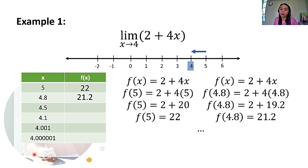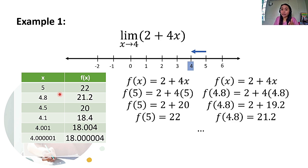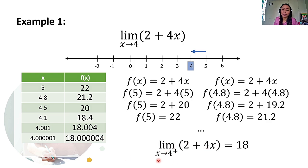Try nyo isolve yung mga sumusunod pa na x values at pakikuha yung function values nila. Upon doing so, ito yung makocompute natin. I-observe natin yung laman ng table of values natin. Habang lumalapit yung x values natin sa 4 from the right, saan namang value papalapit yung nakompute nating f of x? Sa 18 din. Papalapit ito sa 18. Hence, the limit of 2 plus 4x as x approaches 4 from the right. Yung mga nasa kanan ng constant natin, papalapit sa kanya yung consider nating x values, kaya meron tayong exponent na positive sign dun sa ating constant na 4. So, the limit of 2 plus 4x as x approaches 4 from the right is also equal to 18.